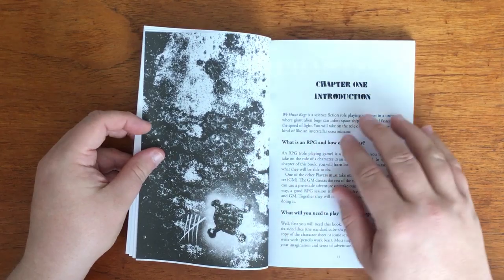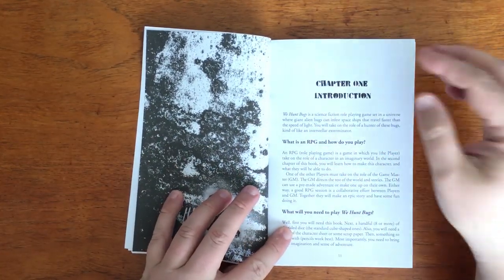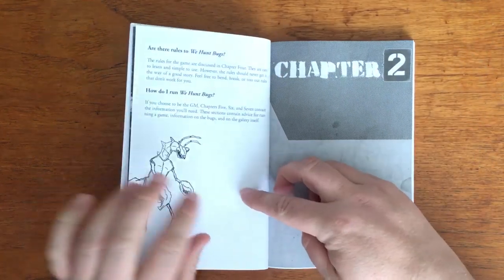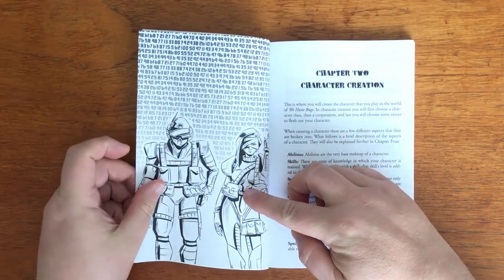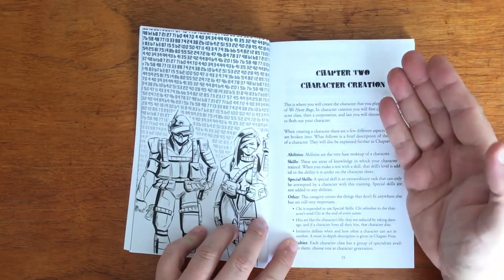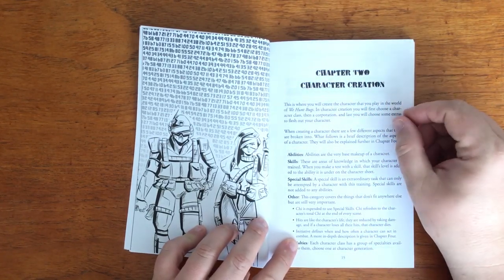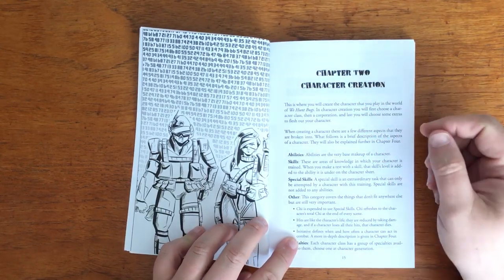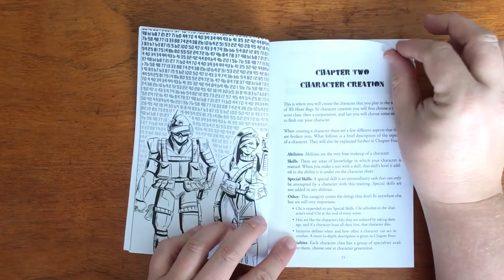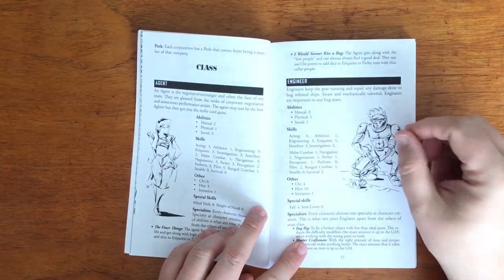Here it discusses what is an RPG, describes what you will need, how to run it and the rules in four small paragraphs. We then move on to Chapter 2, Character Creation. All characters have abilities, those statistics that make up the very base of them. Skills, which are areas of knowledge in which you are trained. Special skills, that are extraordinary tasks that cannot be performed by those with specific training. Other abilities that don't fit anywhere else. Specialities, which are skills that character classes have available to them. And Perks, those abilities that come from being a member of a company.